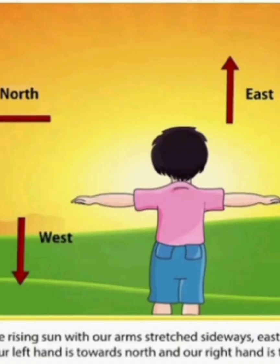Can you find out the directions east and west? If you stand facing the rising sun, your front is directed towards the east and your back is directed towards the west. There are two other directions also — south and north. As you stand facing the rising sun, stretch your hands sidewards. Your right hand points towards the south and your left hand points towards the north.